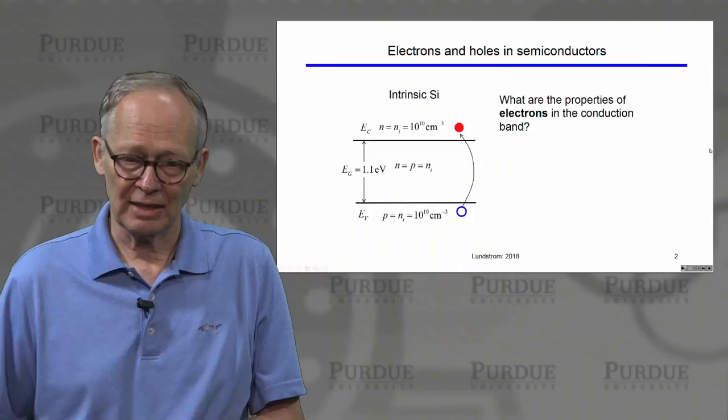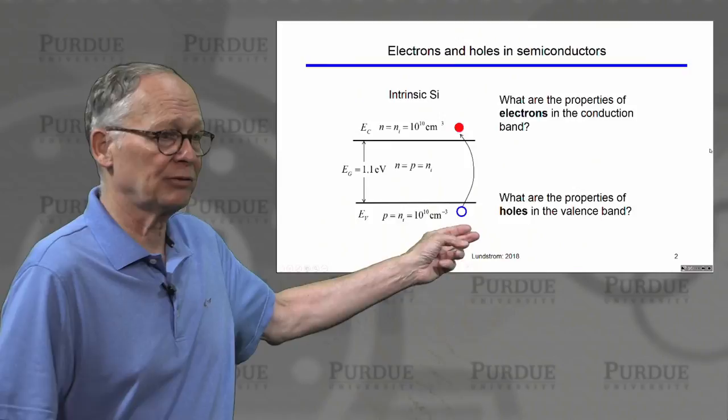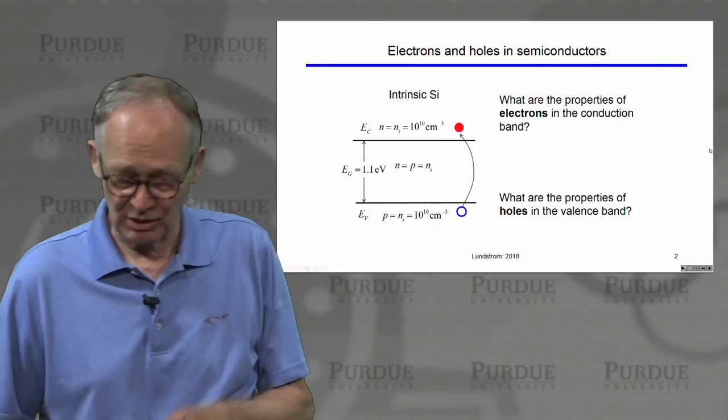The questions we have are: what are the properties of these electrons in the conduction band? And what are the properties of the holes, which we think of as positive charge carriers that move about the crystal lattice in the valence band?